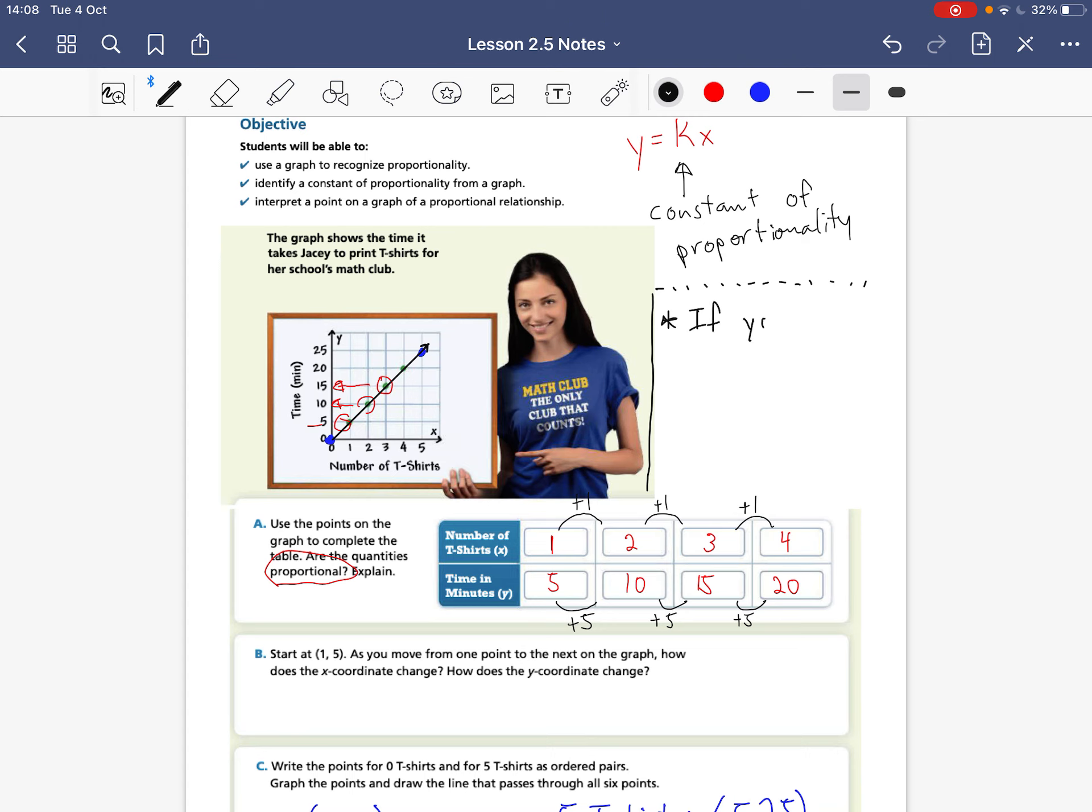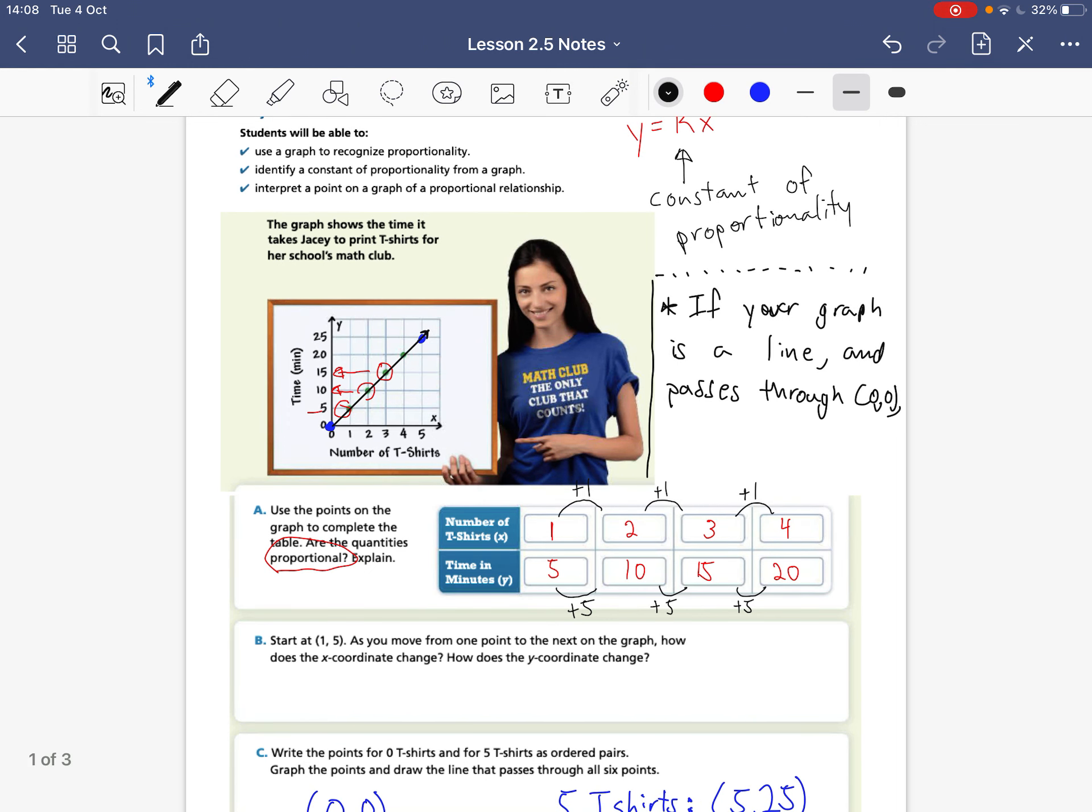If your graph is a line and passes through 0, 0, then it is proportional. So we can see that it is going through the origin and it is creating a straight line. So we know that it is proportional.